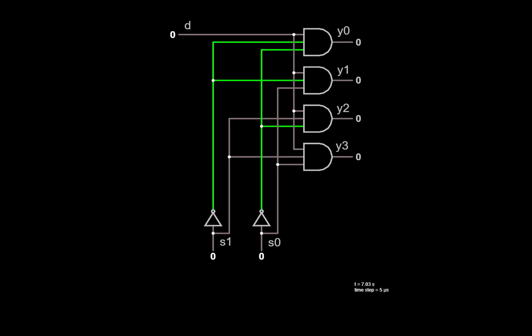The design of a demultiplexer is a lot like the design of a decoder, except each of the AND gates has a third input tied to the data input D. Here, for example, S1 and S0 are both 0, so the AND gate tied to Y0 has two of its inputs already asserted as 1. If we change D from 0 to 1, we see that Y0 changes to a 1 — essentially Y0 follows D. Similarly, if we change S1, two of the inputs of the AND gate tied to Y2 are asserted as 1s, and as we change the value of D, the value of Y2 follows D.